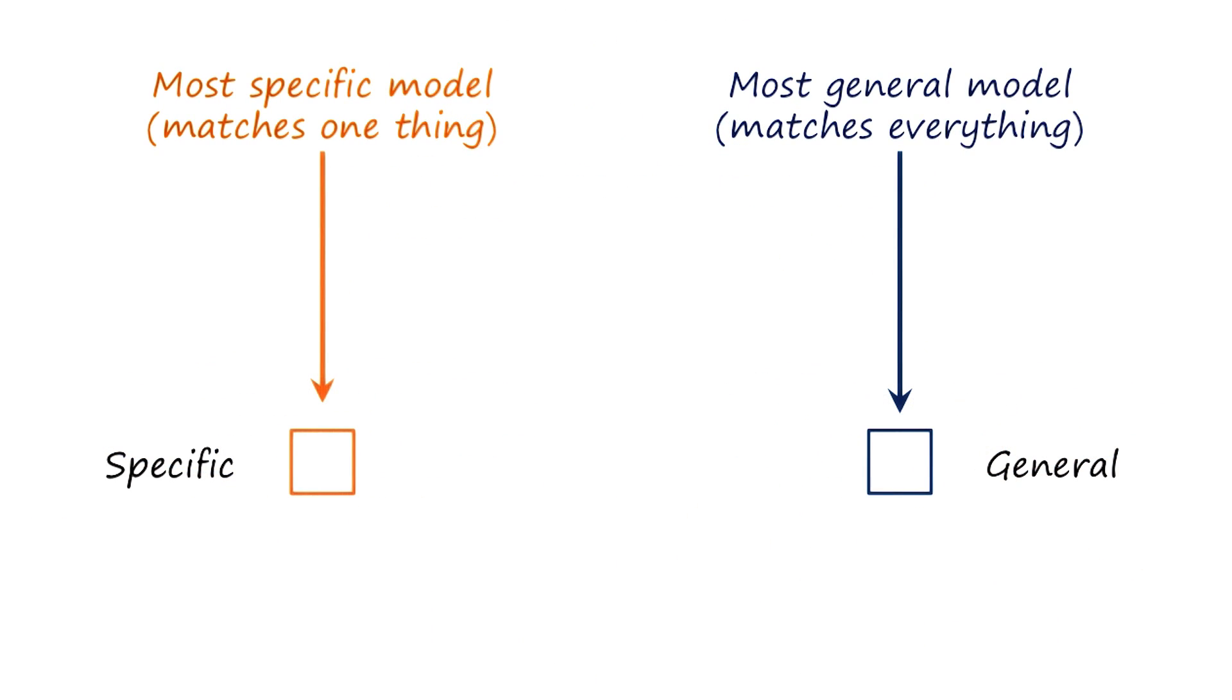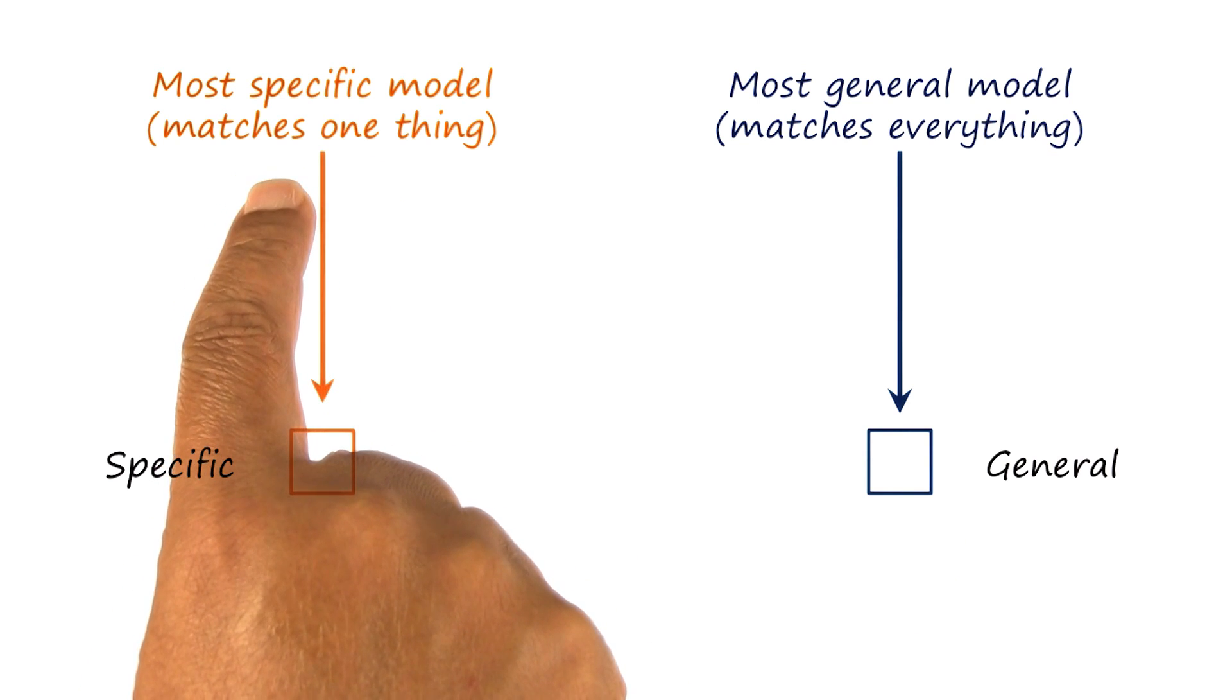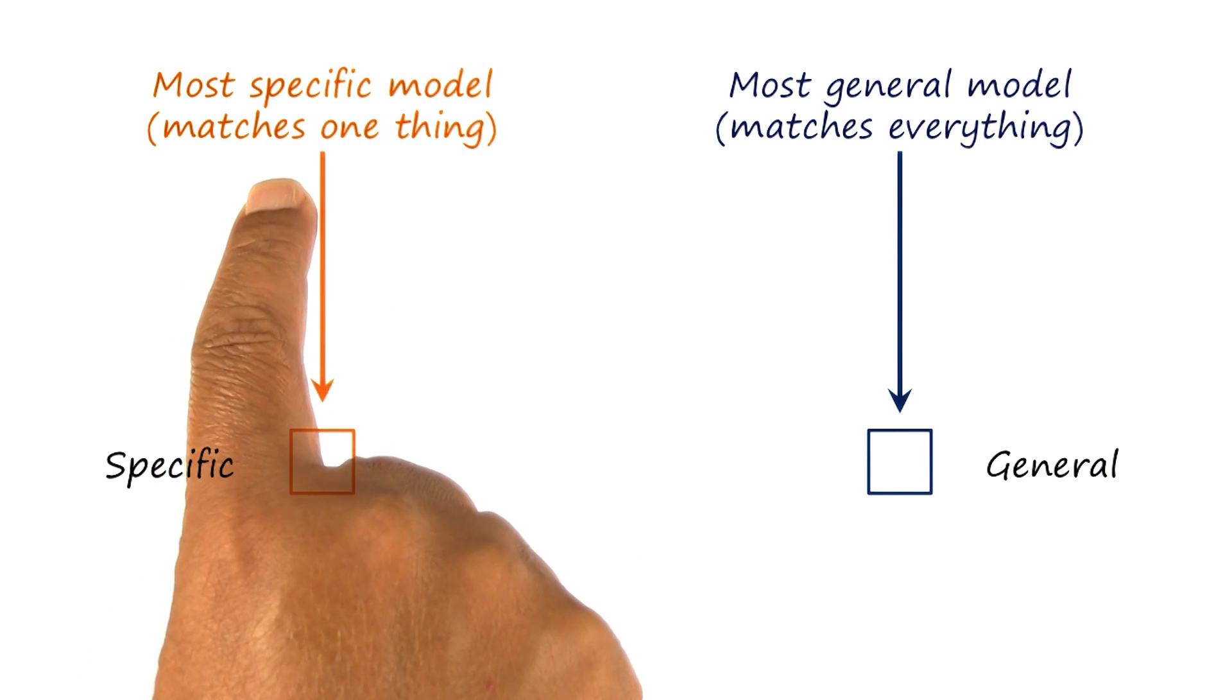Here is another set of visualizations to understand the specific and general models. This is the specific model. The most specific model matches exactly one thing, the four-legged, furry, black animal called Buddy.